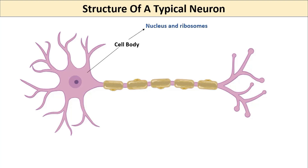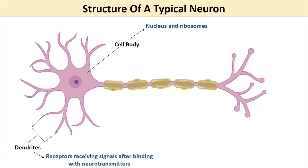To perform the first task — receiving signals — the cell body of neurons has outgrowths called dendrites. The membrane of these dendrites contains receptors to receive signals from chemical messengers called neurotransmitters, which are released by nearby neurons.